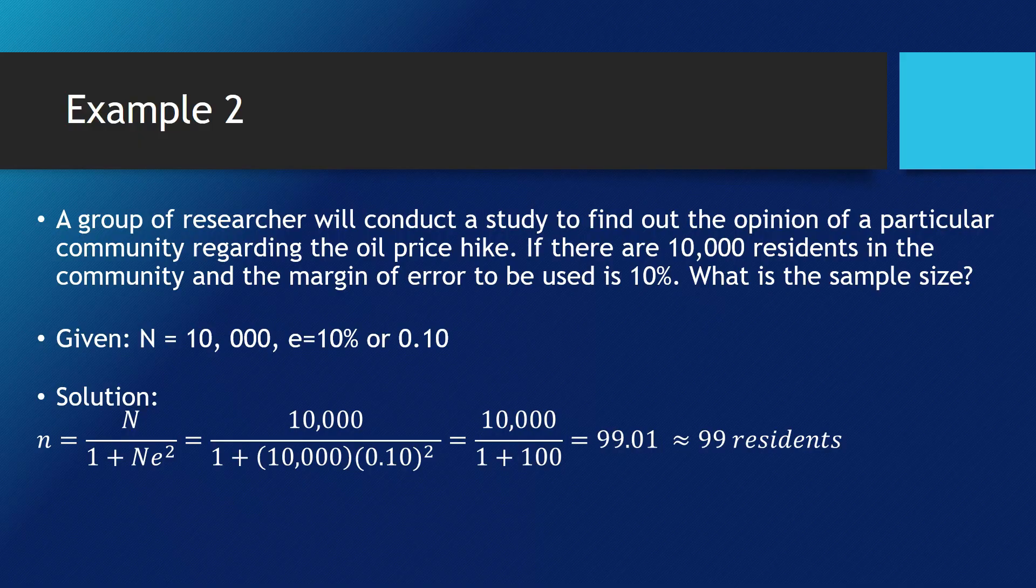The same thing that we are going to do from the previous example, we are going to start operating from the one with the exponents. We have 0.10 raised to the power of 2 and we will multiply it to 10,000 and we will get a value of 100.